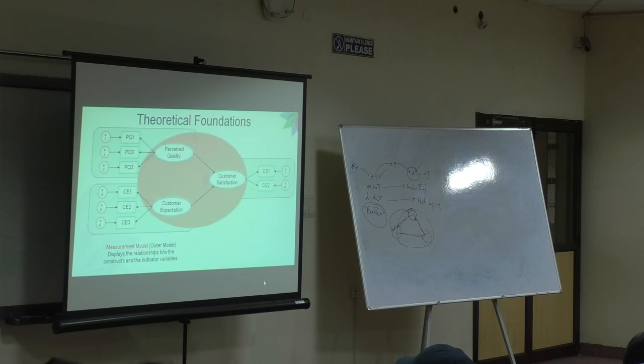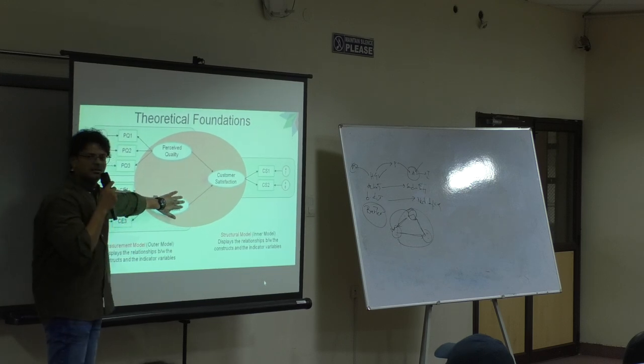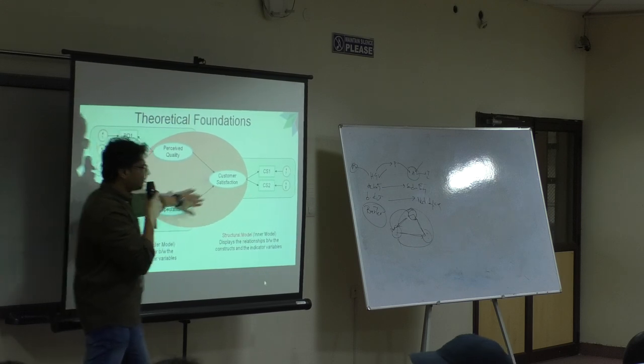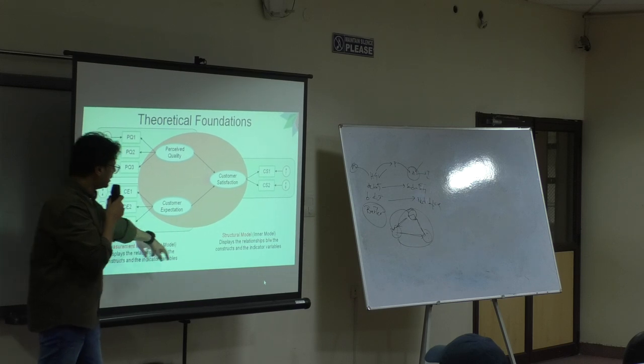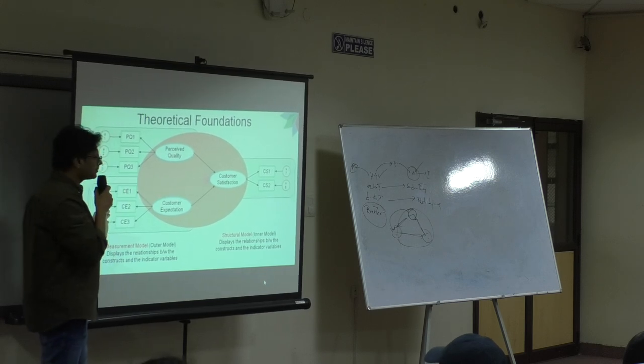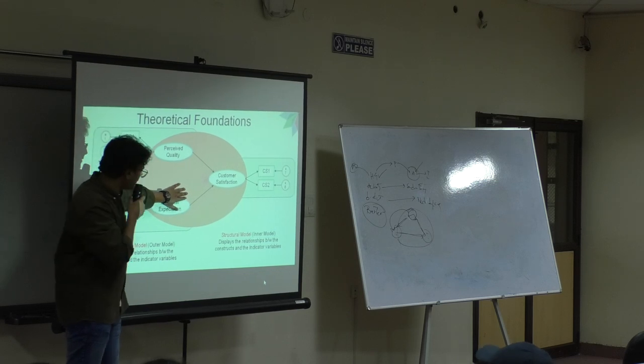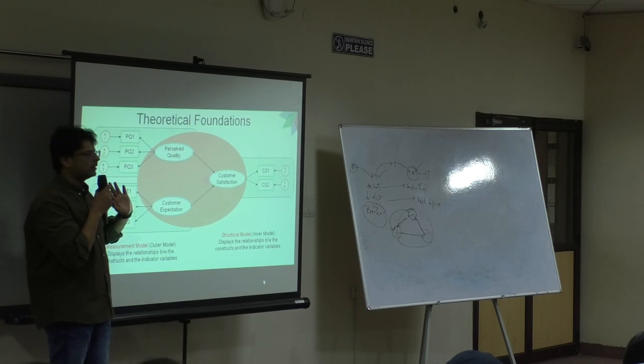In addition to that, we have relationship between constructs itself. That is called a structural model. I have three measurement models here. If I bring all of them together, I have a structural model also. These are only trying to explain to me this value, but finally I need this. This is my core. And that is why this is called the inner model, and these are the outer models.